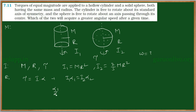So, clearly α₁/α₂ is equal to I₂/I₁, which is equal to 2/5 Mr² divided by Mr². That implies α₁ is equal to 2/5 α₂.